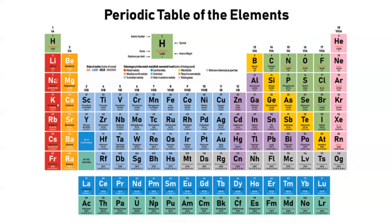For instance, we'll see that group 1 — just this first column with the exception of hydrogen — all of those are red because they're going to behave very similarly. The same thing with the second group: all of them are that same orange color. Group 18, all the way on the right-hand side — again, all of these are going to have similar properties to one another, and that's why we represent them with the same color. The main thing with the periodic table is recognizing that any of these groups going up and down are going to have similar chemical properties, and that's why it's organized the way it is.